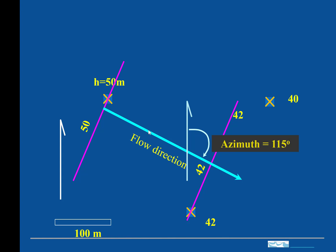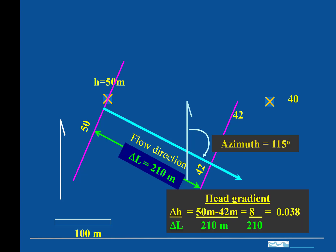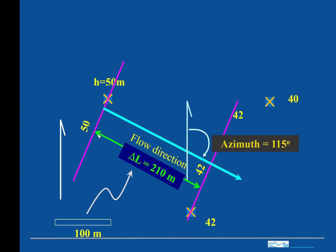All right, so we've got the flow direction. And now we want to determine the head gradient. So we measure the distance between these contours using this scale. And so that's 210 meters.